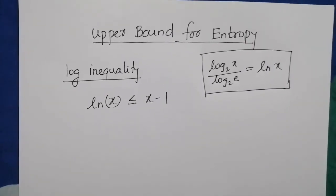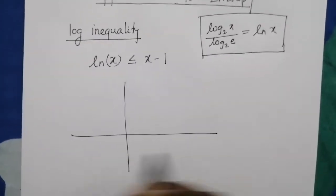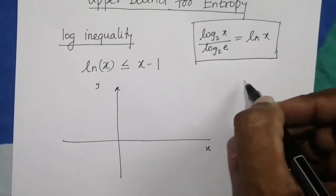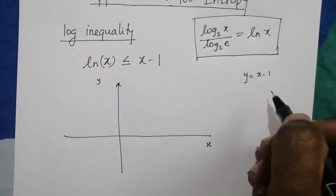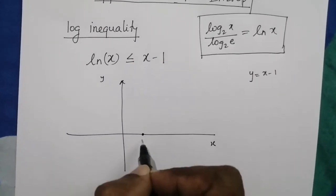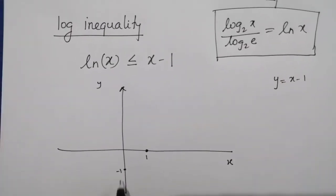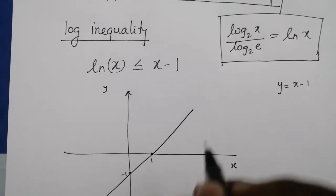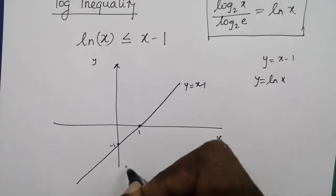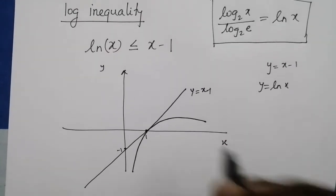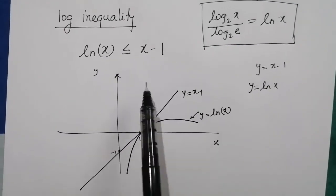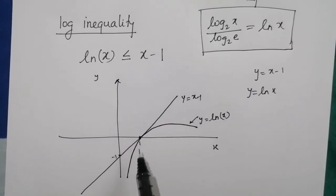Now we will interpret this inequality graphically. We have the x-axis and y-axis. First we plot y = x − 1: when y = 0, x = 1, and when x = 0, y = −1. This gives a straight line. Then y = ln x is plotted as a curve. From the graph we can see that ln x is always less than or equal to x − 1, and equality holds only at x = 1.